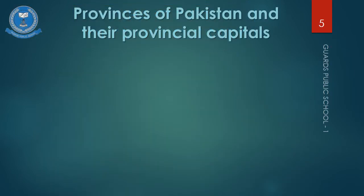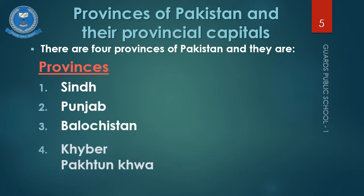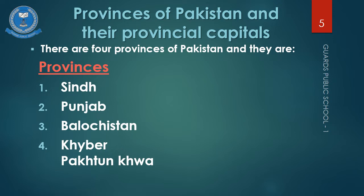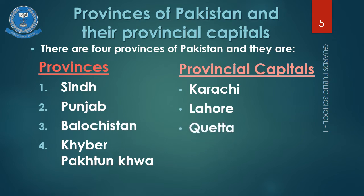Our second topic is Provinces of Pakistan and their provincial capitals. There are 4 provinces of Pakistan and they are Sindh, Punjab, Balochistan, and Khyber Pakhtunkhwa. Their provincial capitals are: the provincial capital of Sindh is Karachi, the provincial capital of Punjab is Lahore, the provincial capital of Balochistan is Quetta, and the provincial capital of Khyber Pakhtunkhwa is Peshawar.